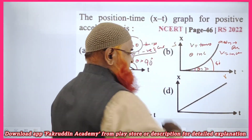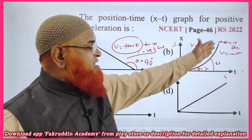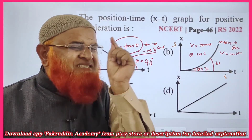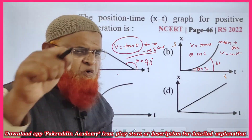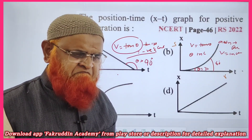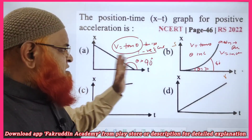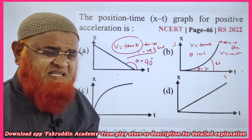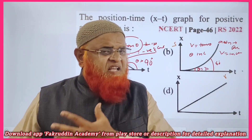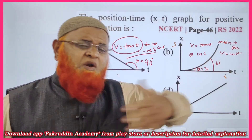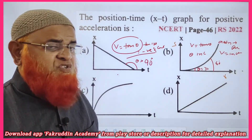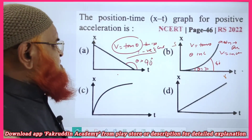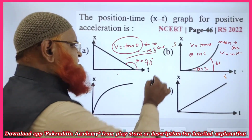Acceleration is present because velocity is increasing and theta is increasing. You just have to observe theta. Here theta is constant; here theta is increasing. Velocity is increasing — just like a train moving from one station to another, velocity increases. There is a constant positive acceleration. So option B is going to be the correct option.